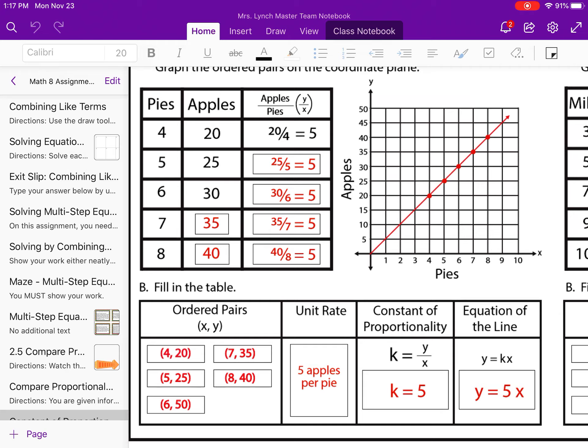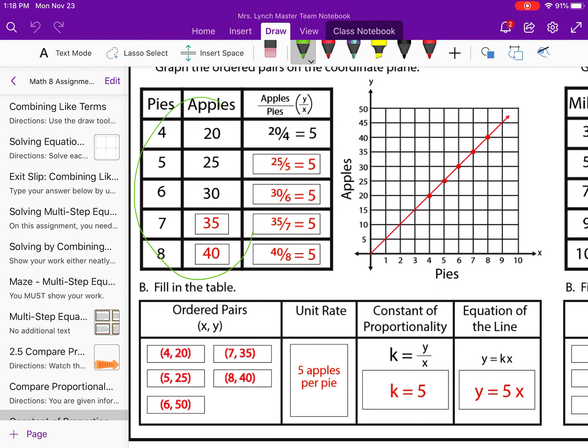So where they got these numbers from, the 4, 20, the 5, 25, where they got all those numbers from comes from the table up here. So all of these numbers, they turned into coordinates, 4, 20, 5, 25. They took these coordinates, and that's what they put on the graph. So if you notice where those dots are, those points are on the graph, those all came from the ordered pairs.